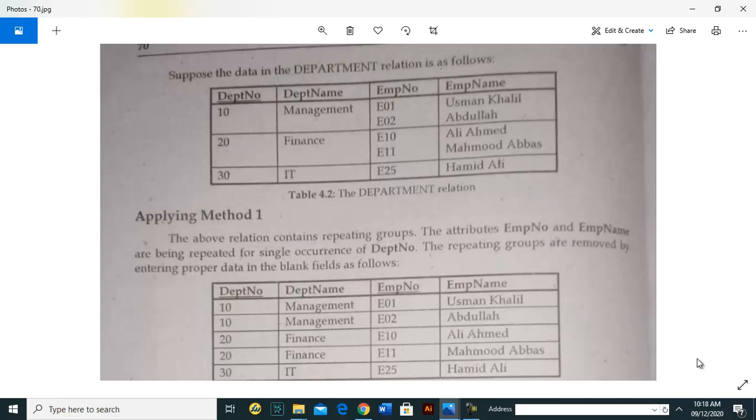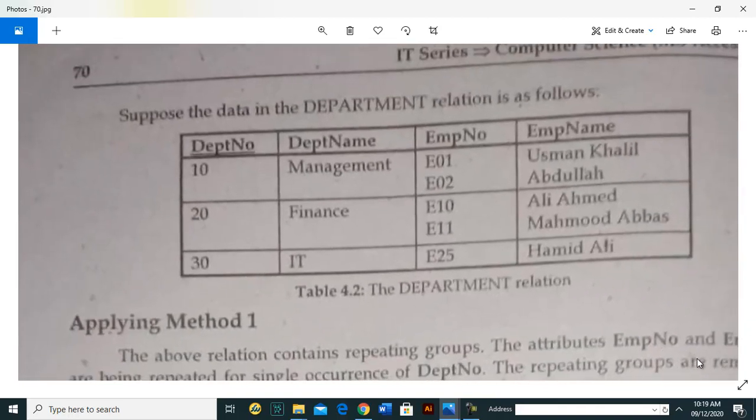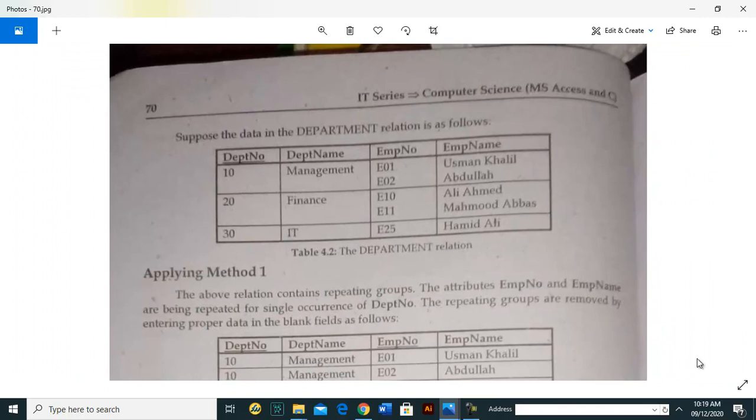You can see the table here. It has department number, department name, employee number, and employee name—four columns. Look at employee number: it repeats twice in the same cell. One cell contains two values, E01 and E02. Similarly, two names appear in the employee field. This relation is not in first normal form.